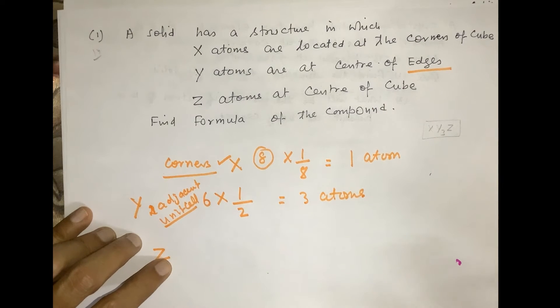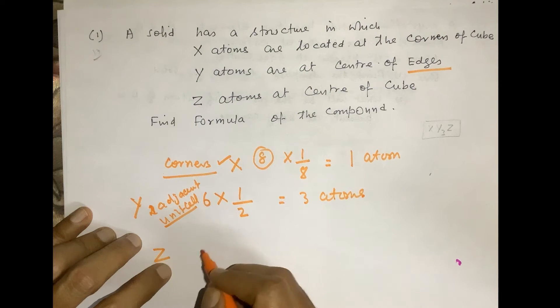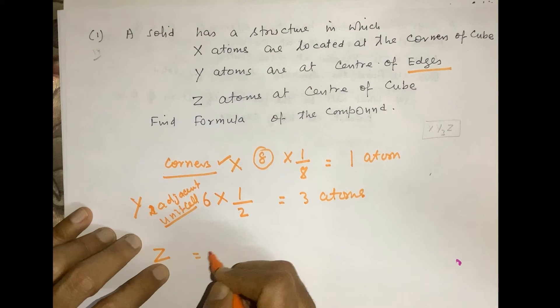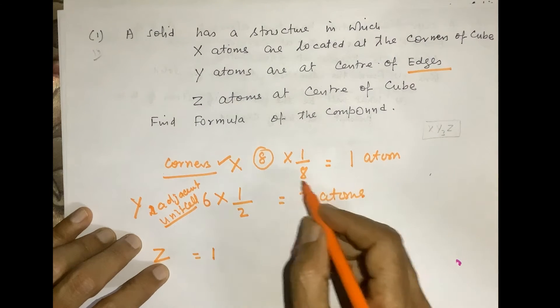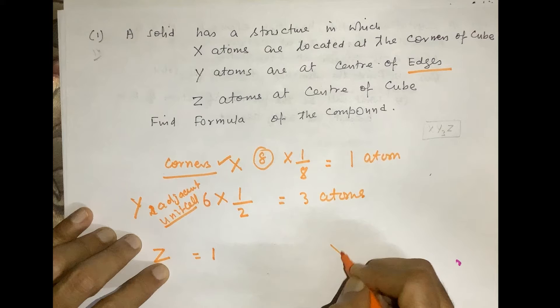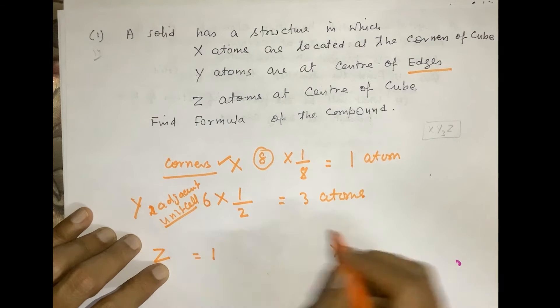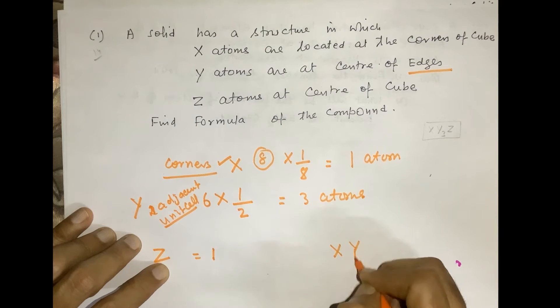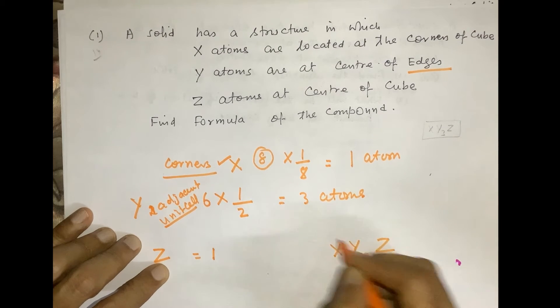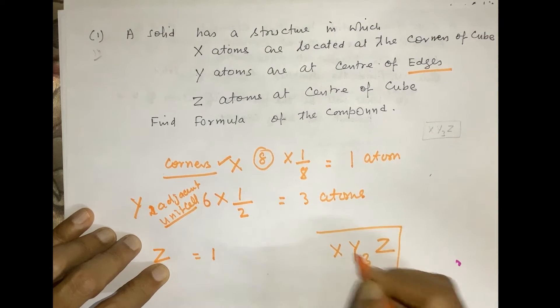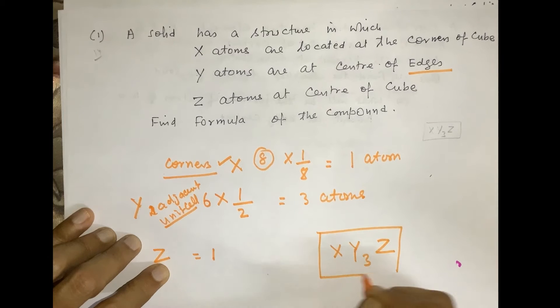Y atoms are at the center of the edges. There are 12 edges — wait, six atoms are at the edges and they are shared by two adjacent unit cells, so 6 × (1/2) = 3 atoms of Y. Z atoms are at the center of the cube, which is independent and not shared by any other unit cell, so Z = 1. The formula of the compound becomes XY₃Z.